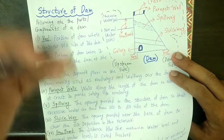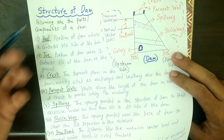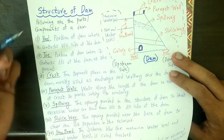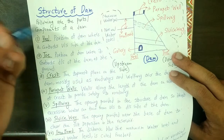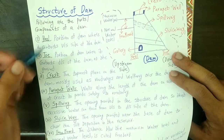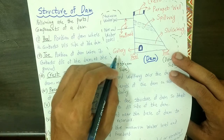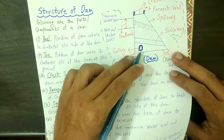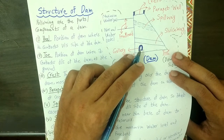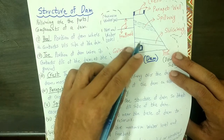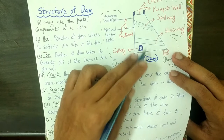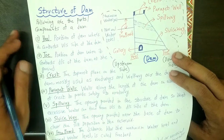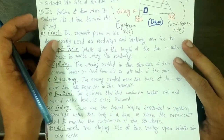The purpose of the gallery is to store equipment for machinery or any operation, and also to monitor and maintain the performance of the dam structure. So galleries are tunnel-shaped horizontal or vertical openings in the structure of the dam used for equipment storage or to monitor the performance of the entire structure.